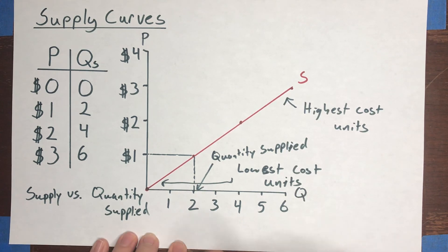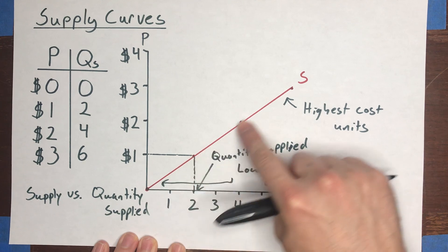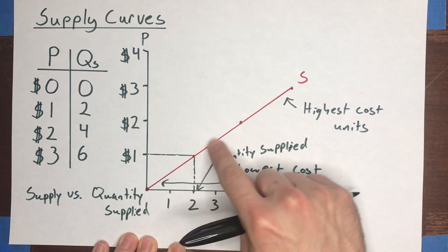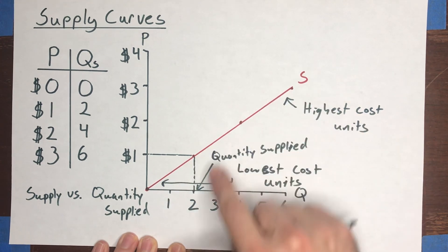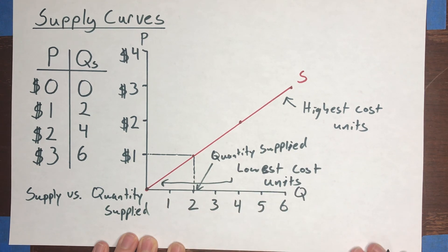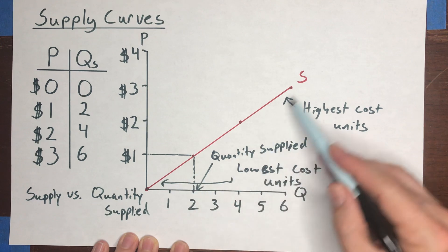Supply refers to the entire relationship between every single price that you could charge or that sellers could charge and the quantity of units that they would be willing to sell at that price. So in economics, supply never refers to a single quantity of units. It always refers to this entire curve, this whole supply curve here.